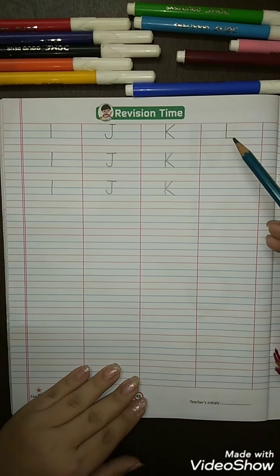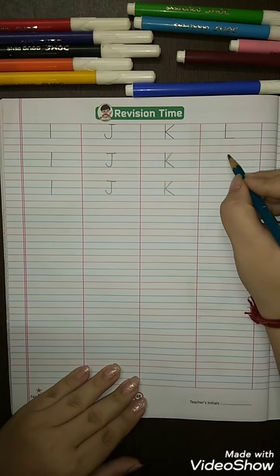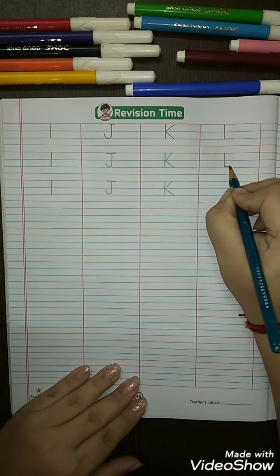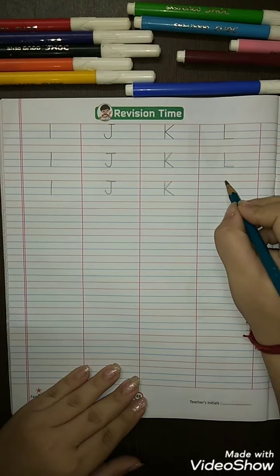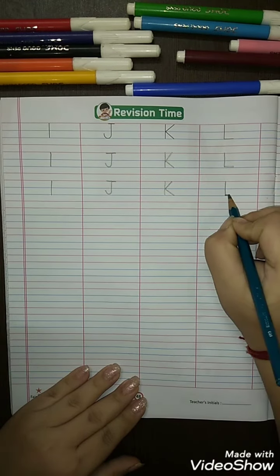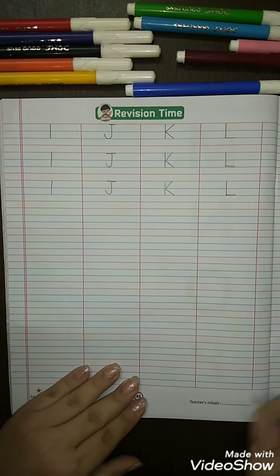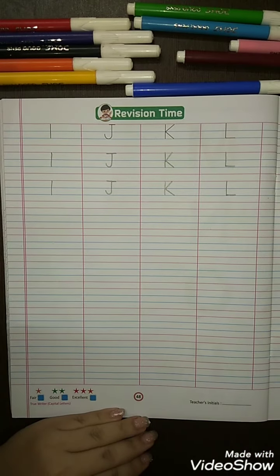Now L, L for lion. Make a standing line, sleeping line. L, L for lion. Okay, same way you will do in your writing book. Okay students, bye, take care.